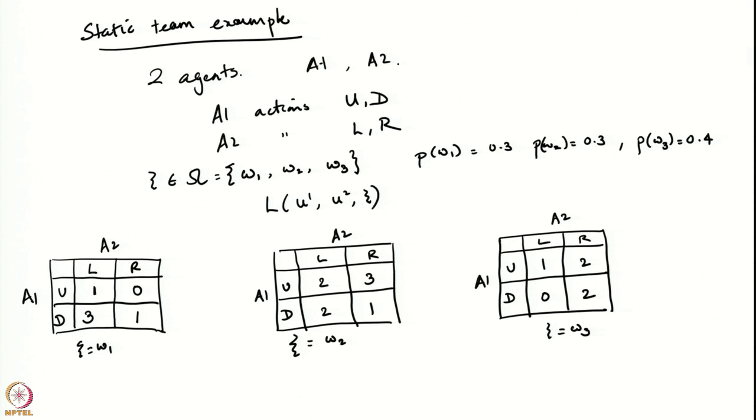This loss function will be fixed across various instances of this problem. We will now look at different information structures for these two agents and see how the solution varies. The first case we will consider is Case 1: when both agents have perfect information — that is, perfect measurement.